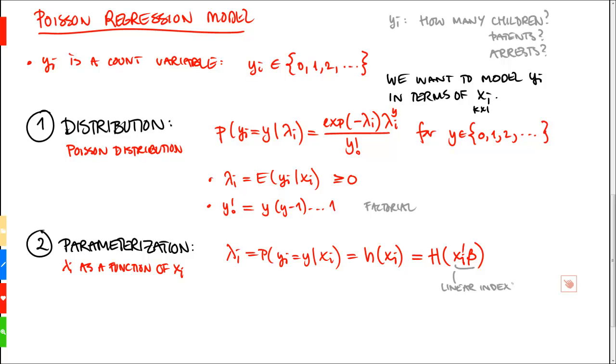So, note here that we have two steps, and this mapping. The first step, xi prime beta, is a mapping from k-dimensional vector xi to a real number. The second step is the function capital H.